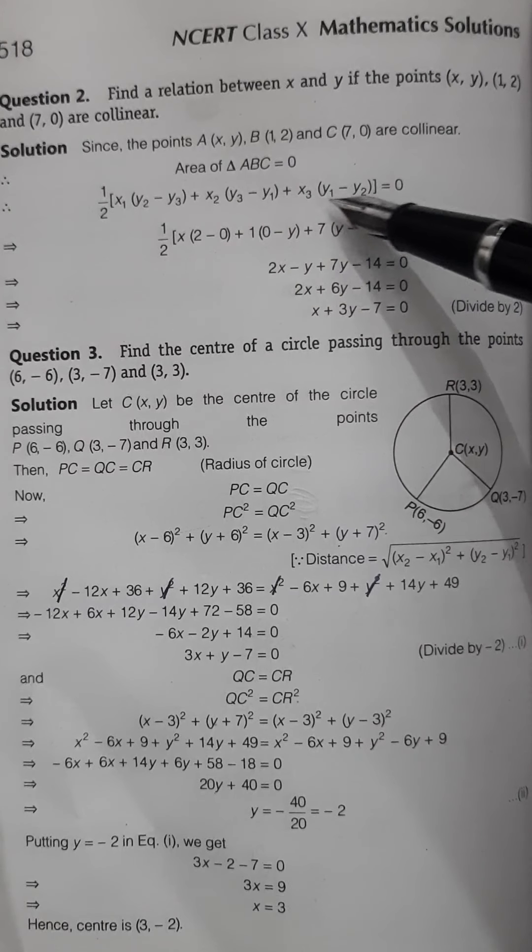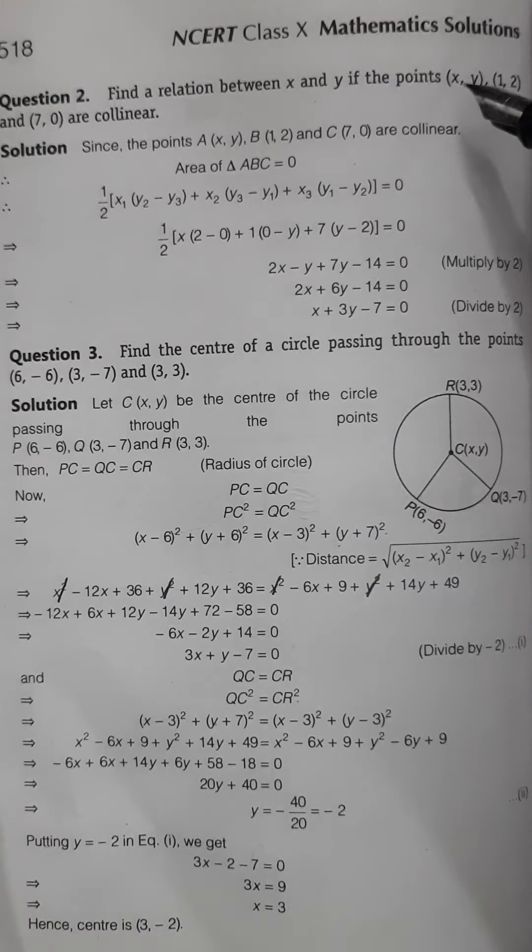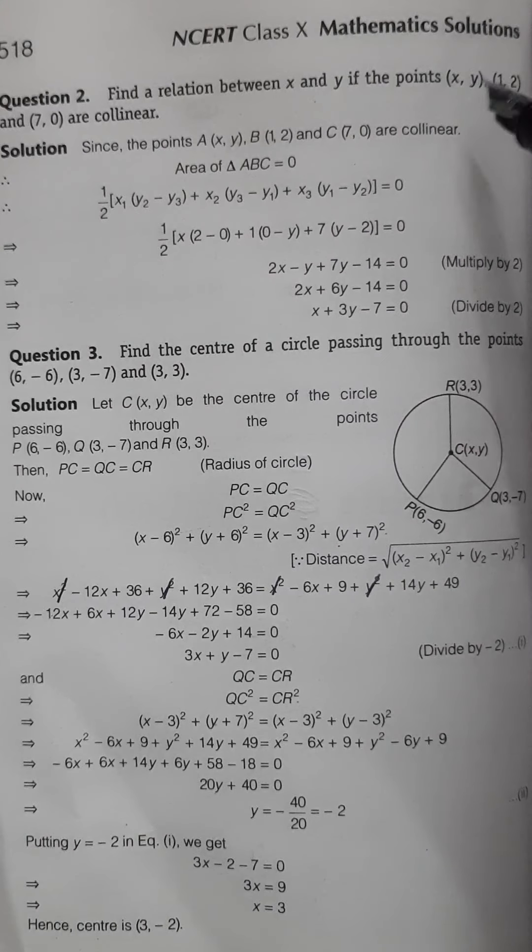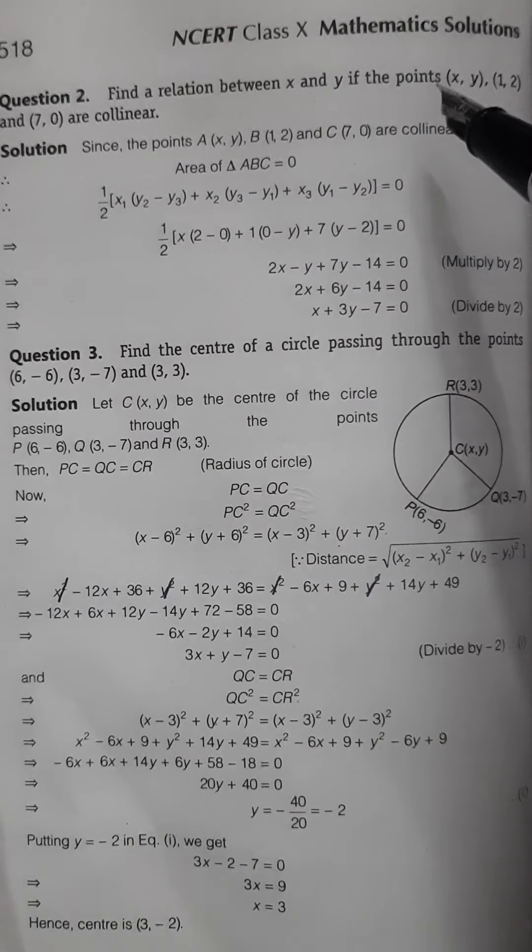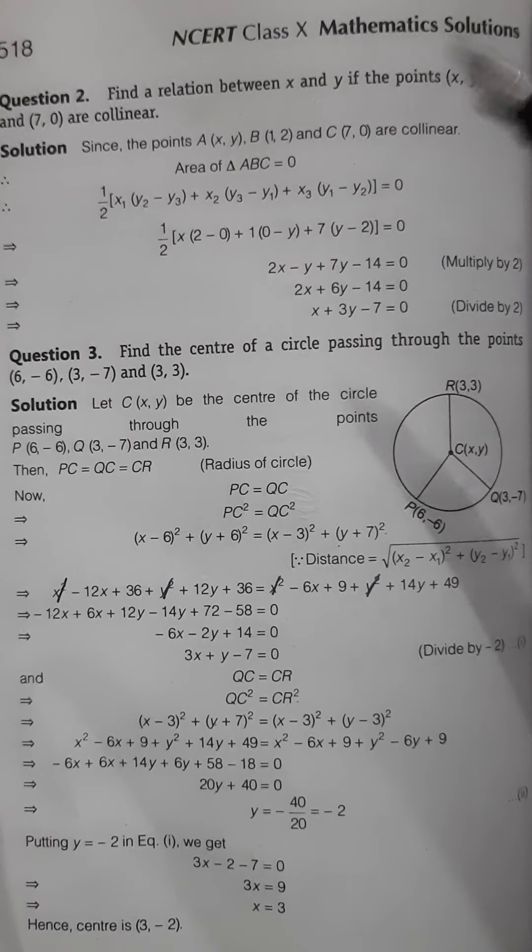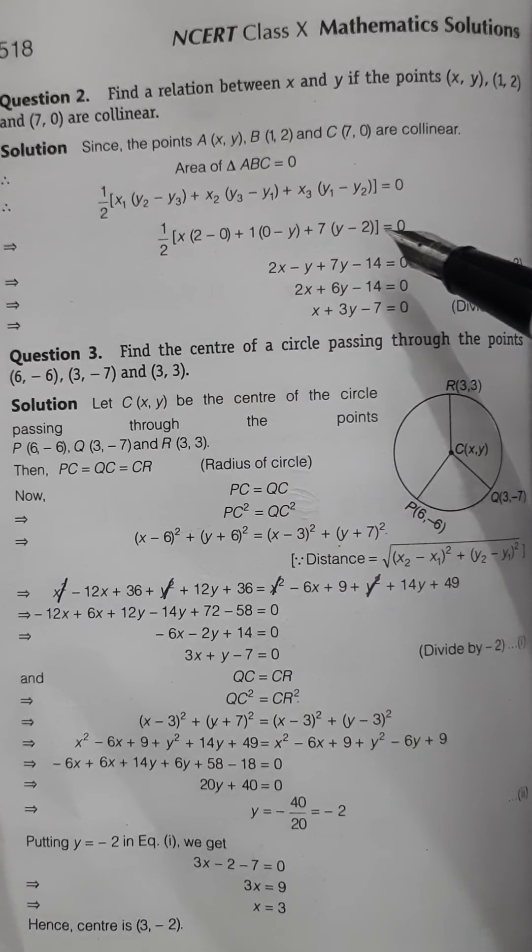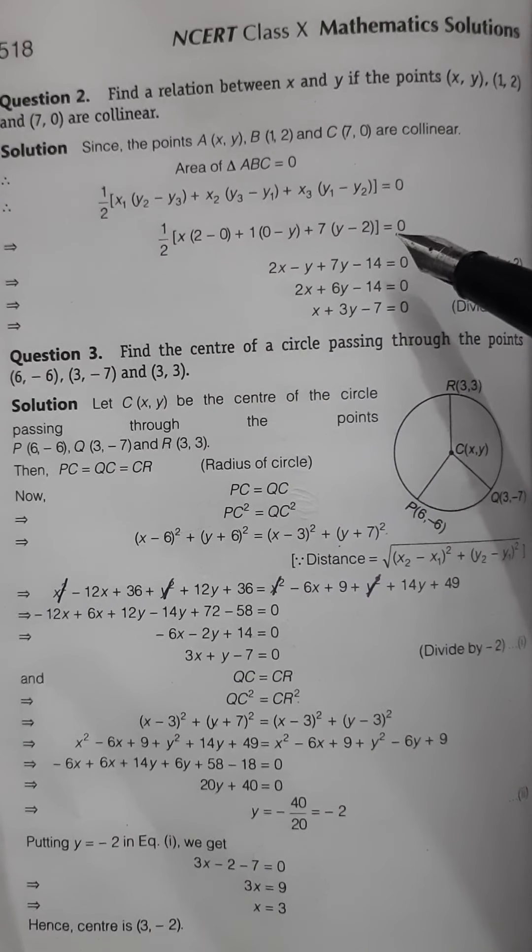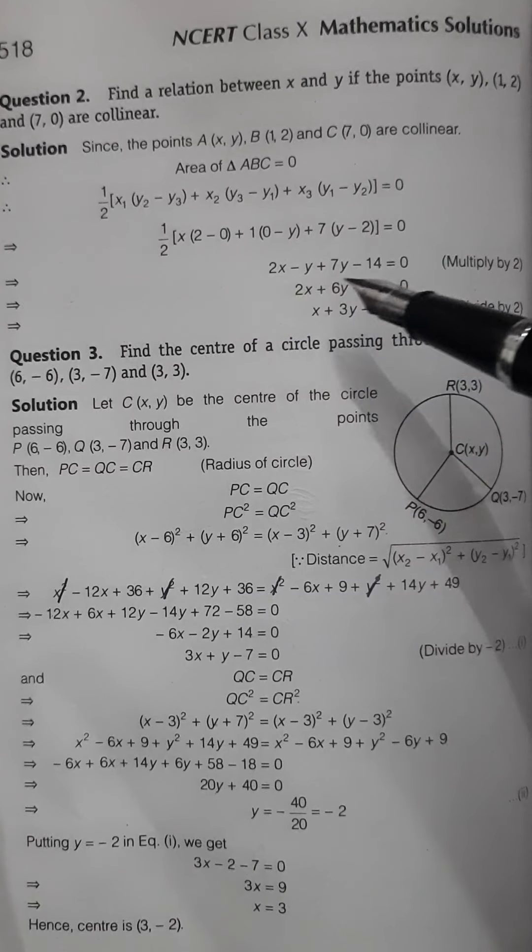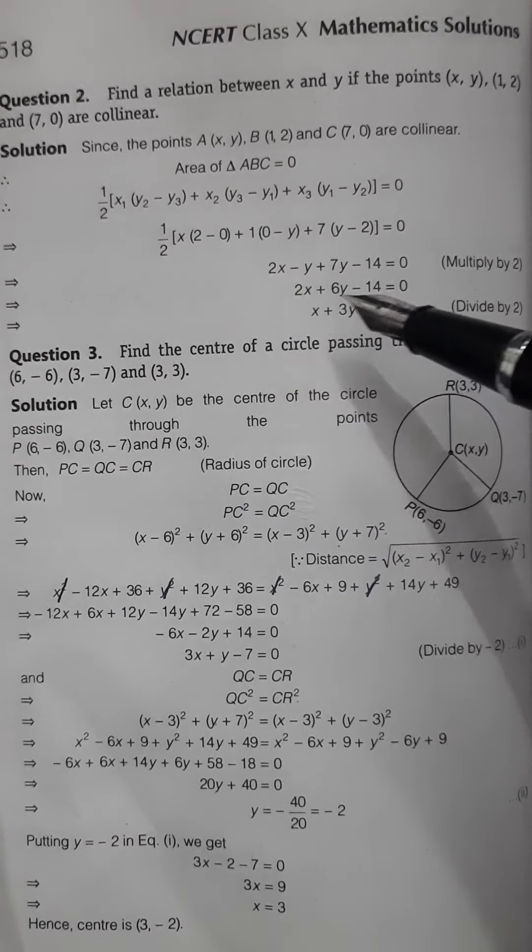The formula is half [x₁(y₂ - y₃) + x₂(y₃ - y₁) + x₃(y₁ - y₂)] = 0. We have x₁y₁ as (x, y), (1, 2) as x₂y₂, and (7, 0) as x₃y₃. We substitute the values here and equate it to 0. When we open the bracket we get an equation.